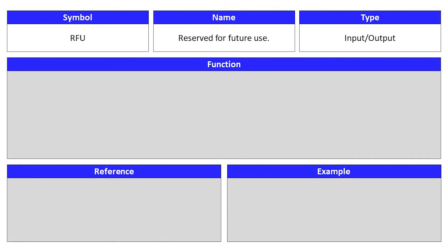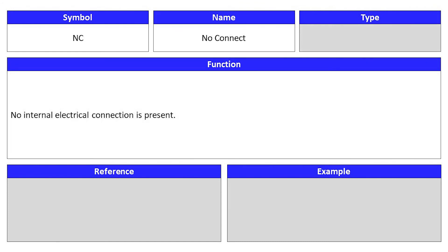In the JEDEC specification, you may see Reserve for Future Use. This can be utilized in the future as either an input or output signal, and its symbol is RFU. No Connect has a symbol of NC, in which no internal electrical connection is present.